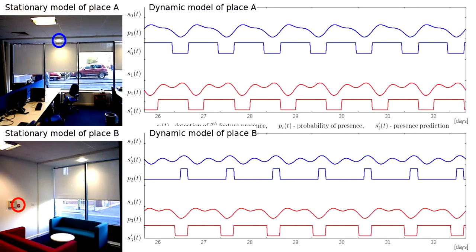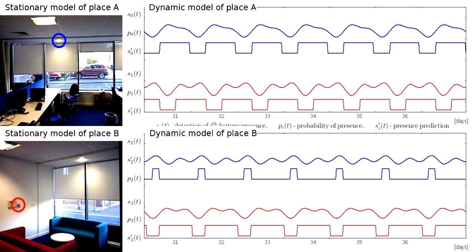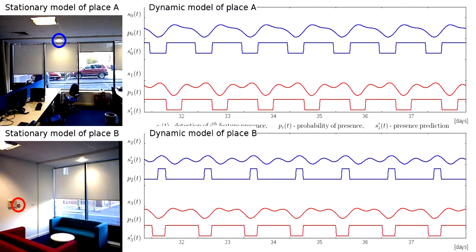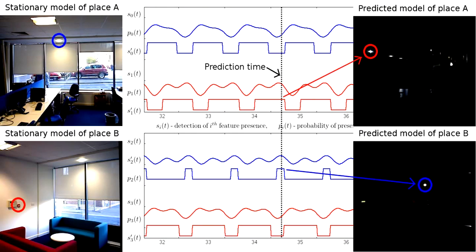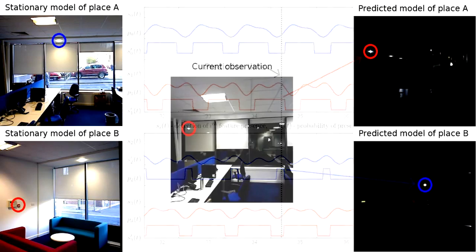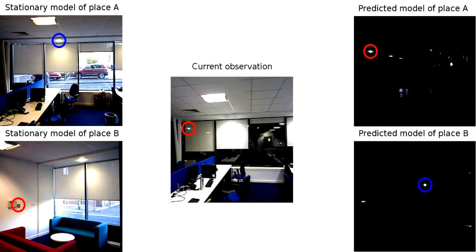This map can predict which features will be visible at a particular time. This predicted map is more likely to contain the image features visible at the given time.